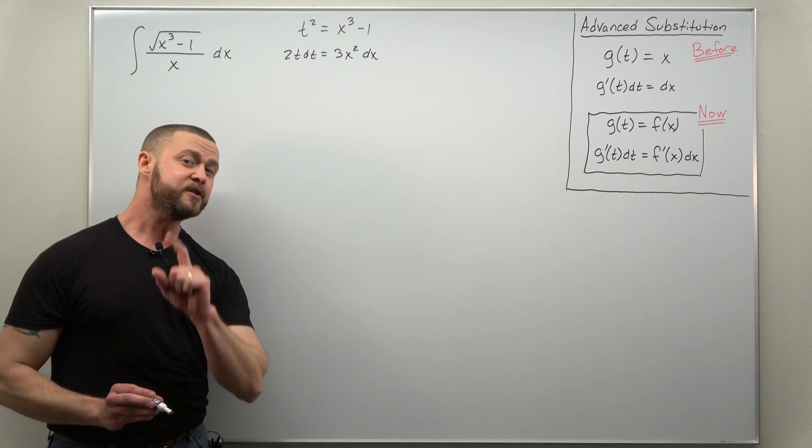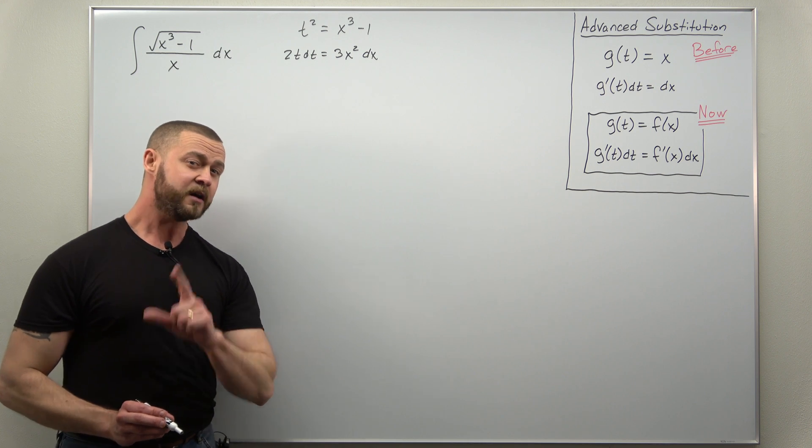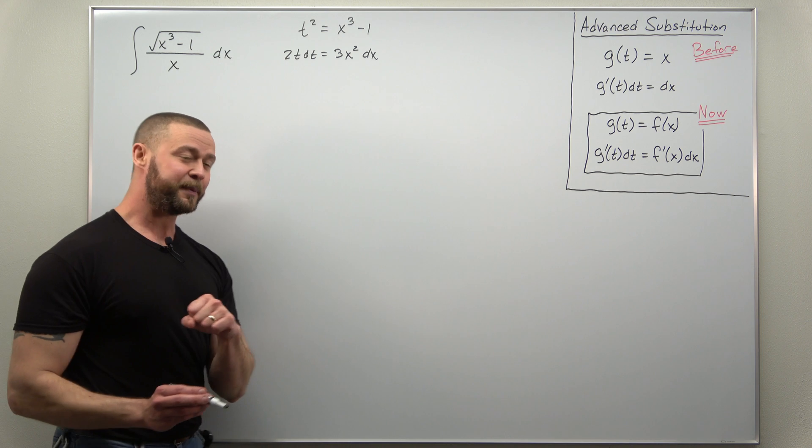Well this is going to be where we use our first algebraic trick. We're going to multiply by 1 thinking of 1 as x squared divided by x squared.